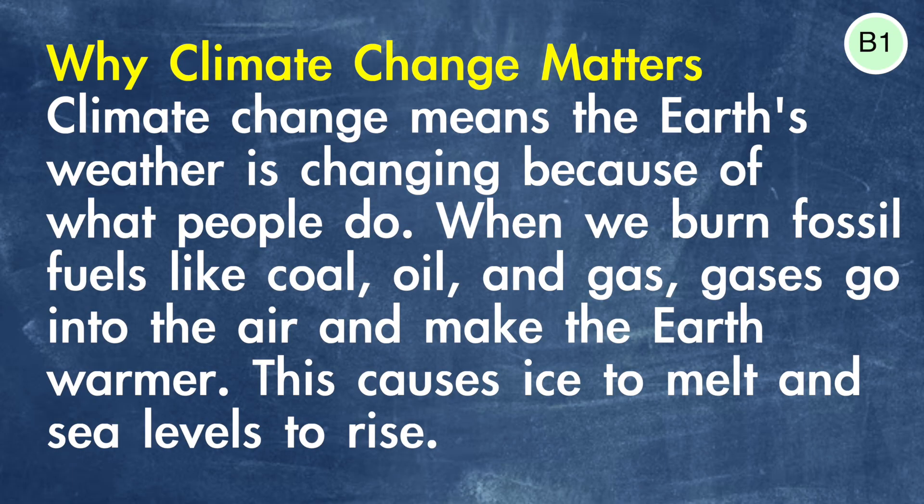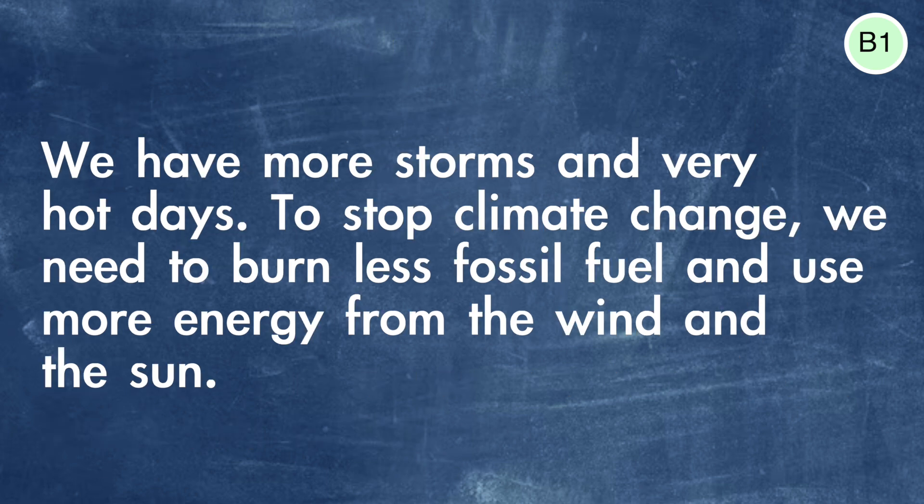Let's move on to the intermediate levels, starting with B1. The text here is a little bit longer — the sentences start to get longer at intermediate level. Pause the video and read this for yourself before we look at it together. The title is 'Why Climate Change Matters.' Climate change means the earth's weather is changing because of what people do. When we burn fossil fuels like coal, oil and gas, gases go into the air and make the earth warmer. This causes ice to melt and sea levels to rise.